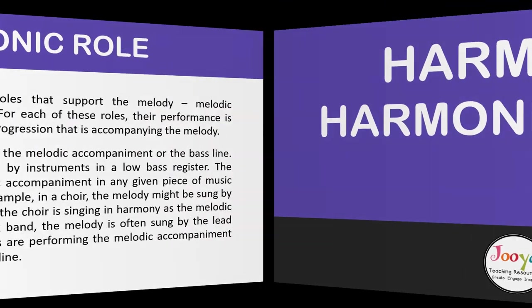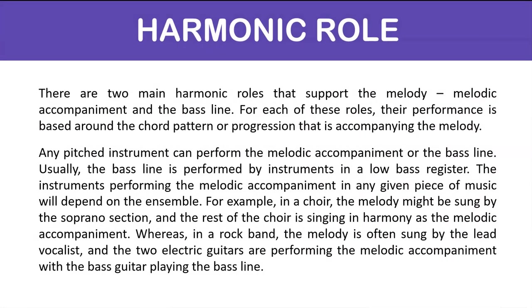There are two main harmonic roles that support the melody: melodic accompaniment and the bass line. For each of these roles, their performance is based around the chord pattern or progression that is accompanying the melody. Any pitched instrument can perform the melodic accompaniment or the bass line. Usually, the bass line is performed by instruments in a low bass register. For example, in a choir, the melody might be sung by the soprano section and the rest of the choir sings in harmony as the melodic accompaniment. Whereas in a rock band, the melody is often sung by the lead vocalist and the two electric guitars perform the melodic accompaniment, with the bass guitar playing the bass line.